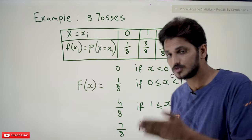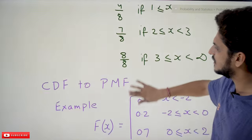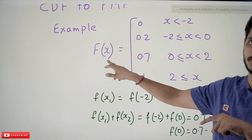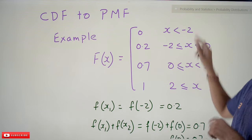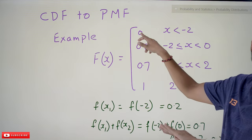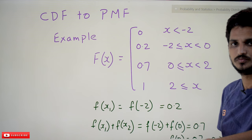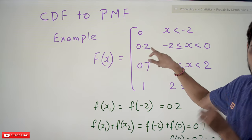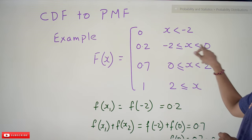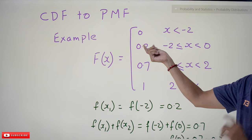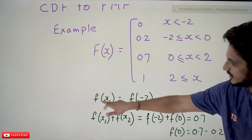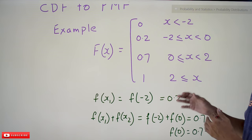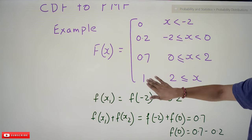Similarly, if cumulative distribution function is given, we can convert it into probability mass function. We will do one example: CDF to PMF. The given cumulative distribution function F(x) is: 0 for x < −2, meaning before −2 there is no probability. The next value is 0.2 for −2 ≤ x < 0. Note that as we keep adding probabilities the maximum we can reach is 1 — that is 0.2, 0.7, and finally 1.